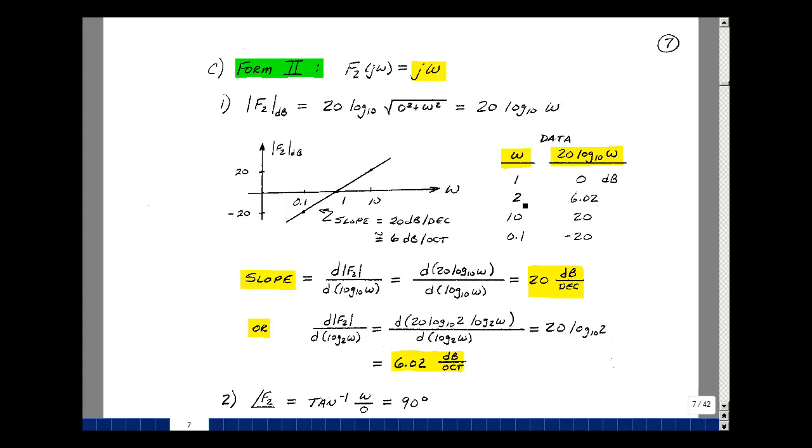Here I had a one octave change, and the slope would be 6.02 dB in one octave. Let's even derive this mathematically. The slope is the rise over the run, so we take the derivative of our function F2 with respect to the x-axis, which is log base 10 of omega. You bring out the 20, and you have d log base 10 of omega with respect to d log base 10 of omega, dx dx. Those cancel and just get 20. Our y-axis is dB and our x-axis is decades. So 20 dB per decade.